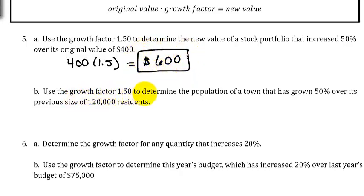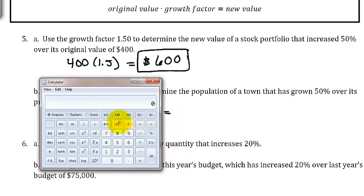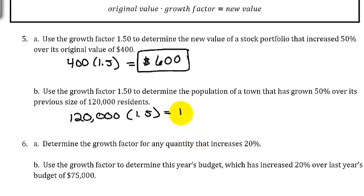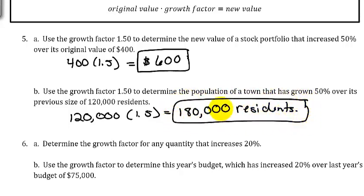Use the growth factor of 1.5 to determine the population of a town that has grown 50% over its previous size of 120,000 residents. We take 120,000 and multiply it by the growth factor of 1.5, giving us 180,000 residents. Always make sure you are labeling your answers.